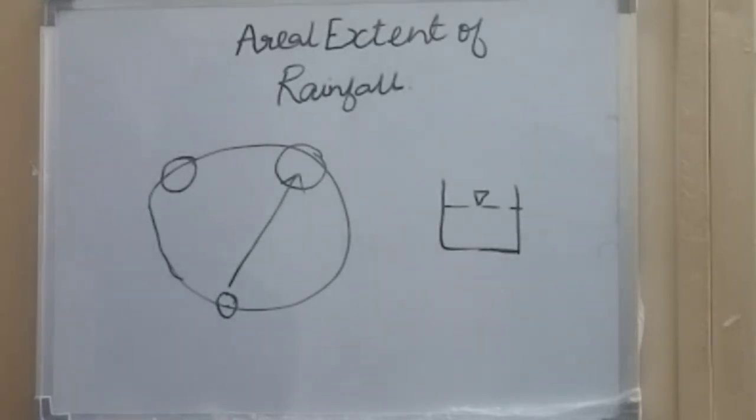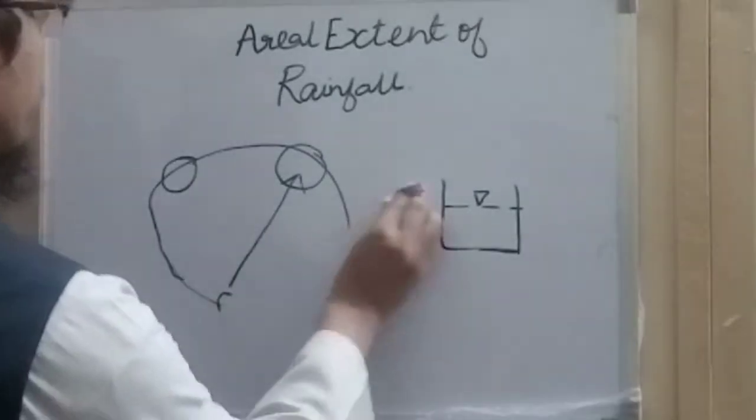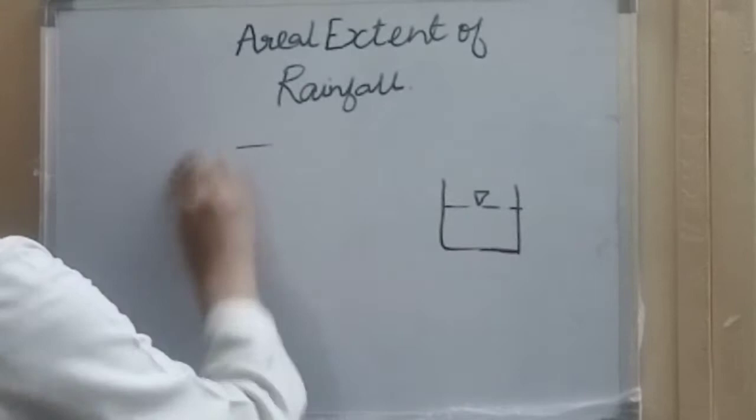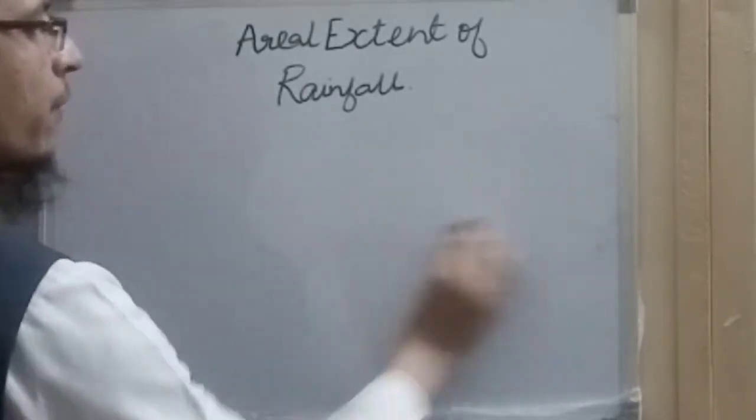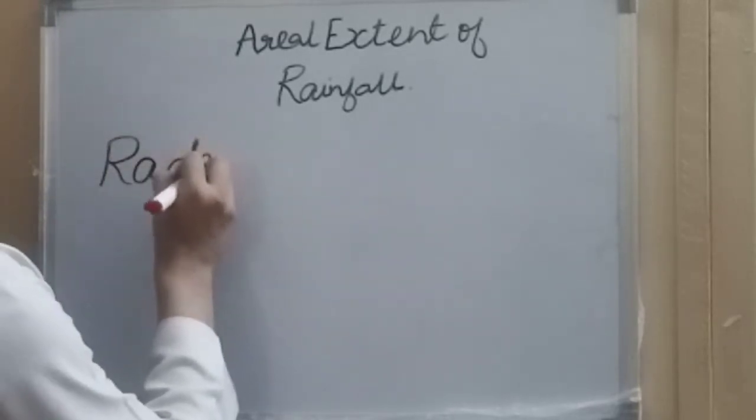This is possible only if we measure the aerial extent of rainfall. To measure the aerial extent, the instrument used is radar, or from a meteorological point of view, it is called meteorological radar.